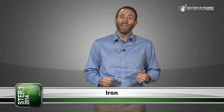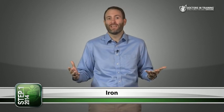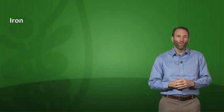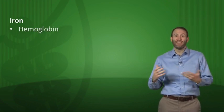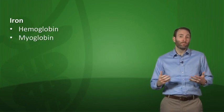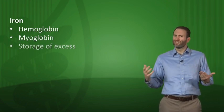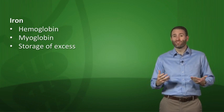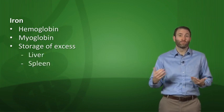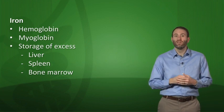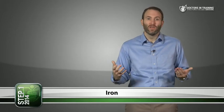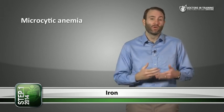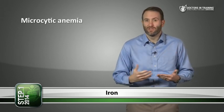Today we're talking about minerals, starting with iron. Where do we find iron in the body? Primarily in RBCs within hemoglobin, and also in myoglobin in muscle cells. Excess iron is stored in the liver, spleen, and bone marrow. If you don't have enough iron stored, that leads to microcytic anemia, which we'll cover more in the hematology sections.